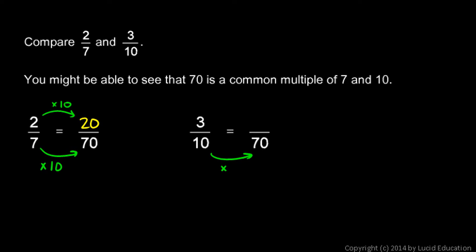Well, if we take 10 and multiply it by 7, then we'll have 70. So to get from this fraction to that one, we've multiplied the denominator by 7, which means we also have to multiply the numerator by 7. And 3 times 7 is 21.